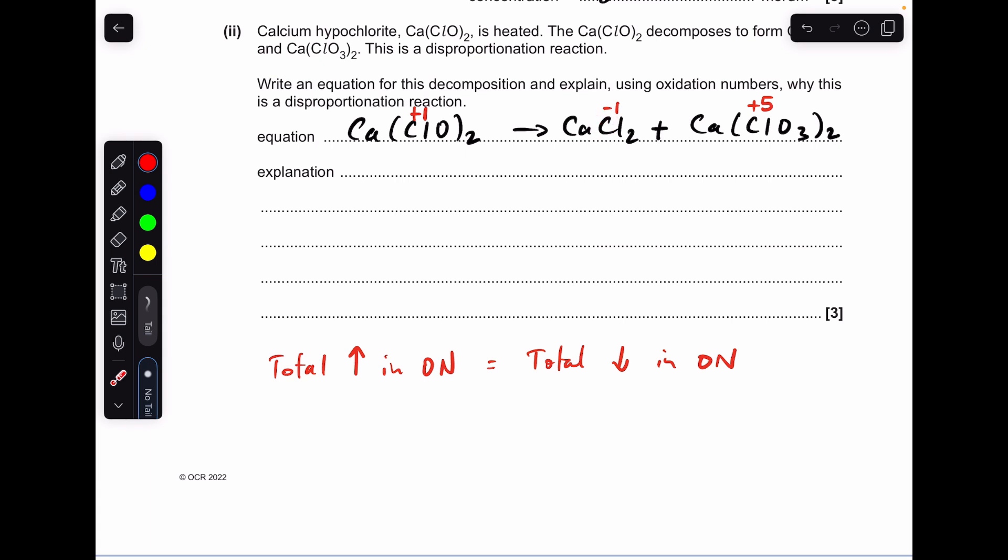So we get a total decrease of 4. Now we've got that in, we just need to balance the calcium. We've got 3 calciums on the right, we've only got one on the left, so if we put a 3 in front of there.